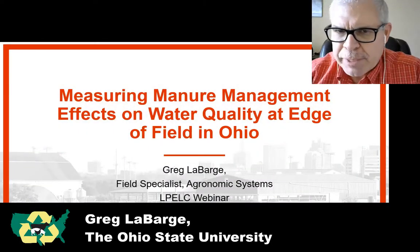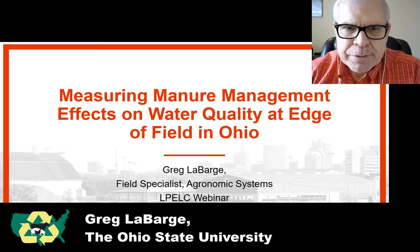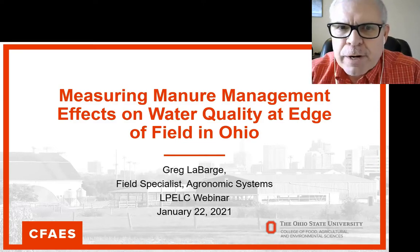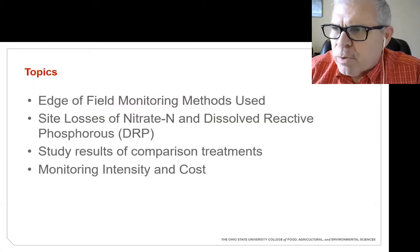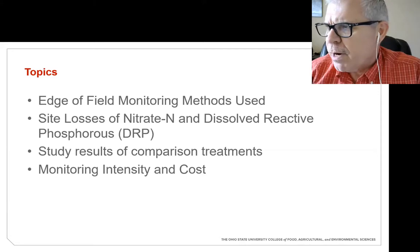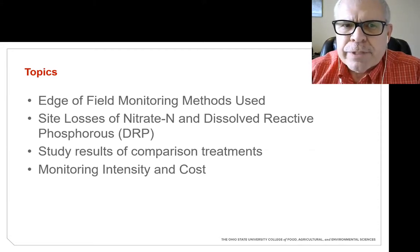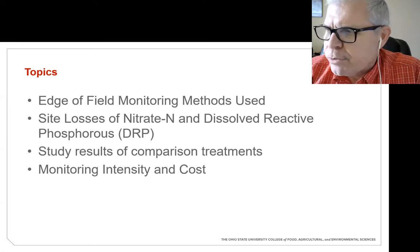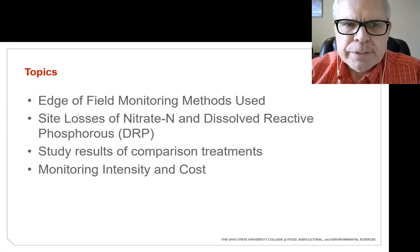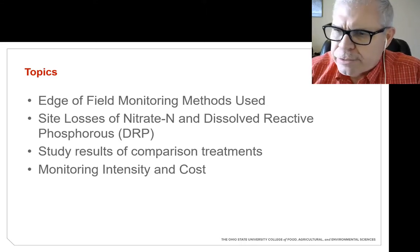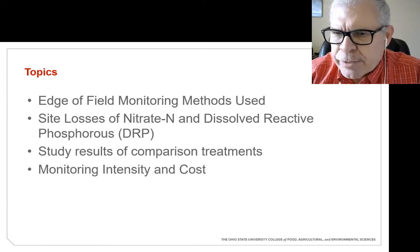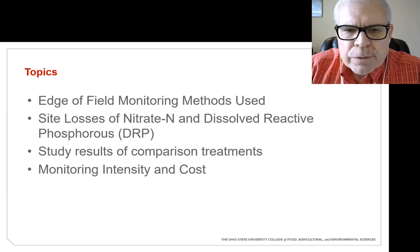Thanks to all of you for participating today. We appreciate the opportunity to share what we're doing here in the state of Ohio in relationship to measuring water quality effects of agricultural practices at the edge of the field. Today we'll discuss some of the methods we're using to get that done, talk about site losses of nitrate nitrogen as well as dissolved reactive phosphorus, do a study comparison looking at treatments and their effects on nitrogen and phosphorus loss, and comment on monitoring — which is really critical if we want to know if we're making progress towards water quality improvement goals.